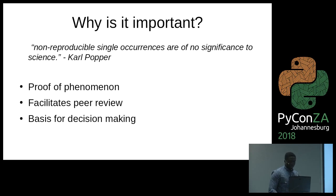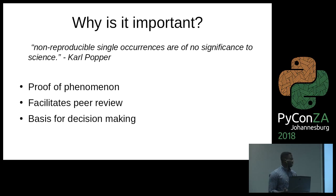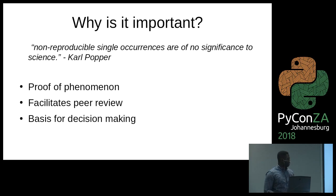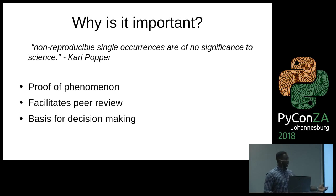Why is reproducibility important? Karl Popper said that non-reproducible single occurrences are of no significance to science. And that's true. Because if you are able to get some data, do some analysis on it, and then you are the only one that can get the same results — every time you pass on that analysis, everybody seems to be getting different results — it's of no use to anybody, to your clients, to your company, or anybody that is going to be using your product or your analysis.